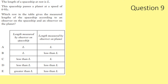Question 9. The length of a spaceship at rest is L. It passes a planet at 0.95 C. The observer on the spaceship measures L because they are at rest relative to the ship. For the observer on the planet, relativistic effects cause length contraction, so they measure less than L. Answer: B.